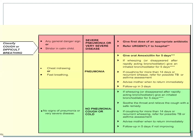Any general danger sign or stridor indicates severe pneumonia or severe respiratory disease. The appropriate antibiotic is provided and the child is immediately referred to hospital. In the second category, if there is chest indrawing or fast breathing, it is classified as pneumonia and oral amoxicillin is provided for 5 days. If there is concomitant wheeze, a short-acting bronchodilator is provided. If there is a cough for more than 2 weeks, the child is referred for further TB or asthma assessment.